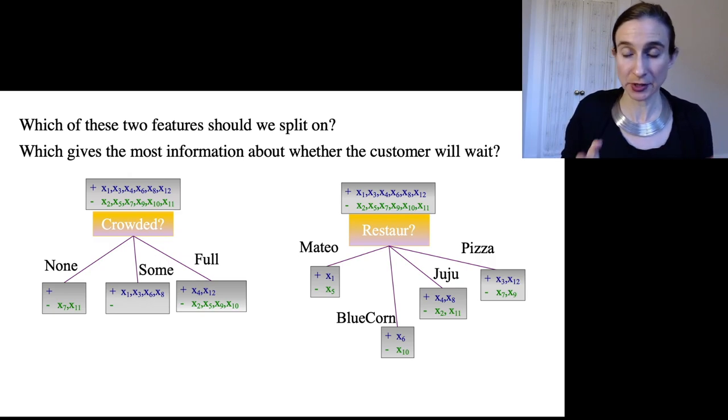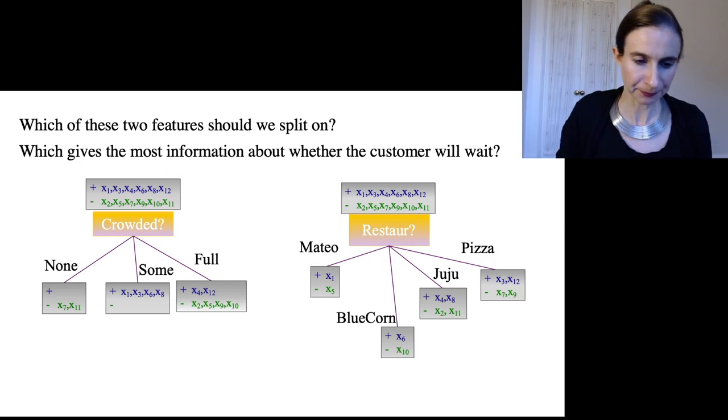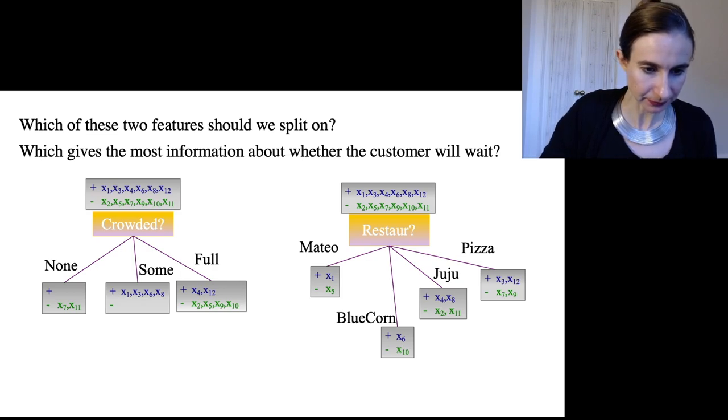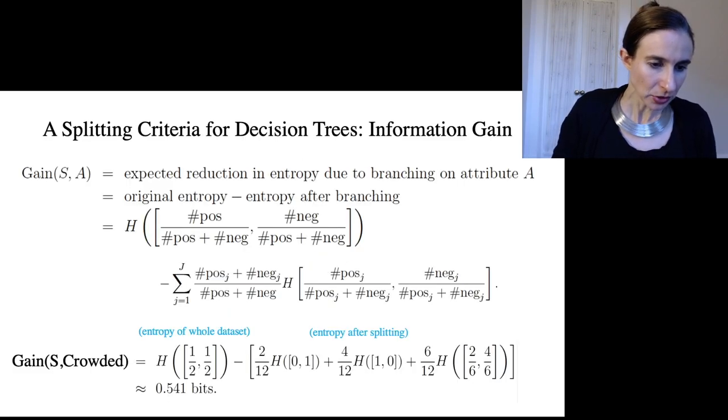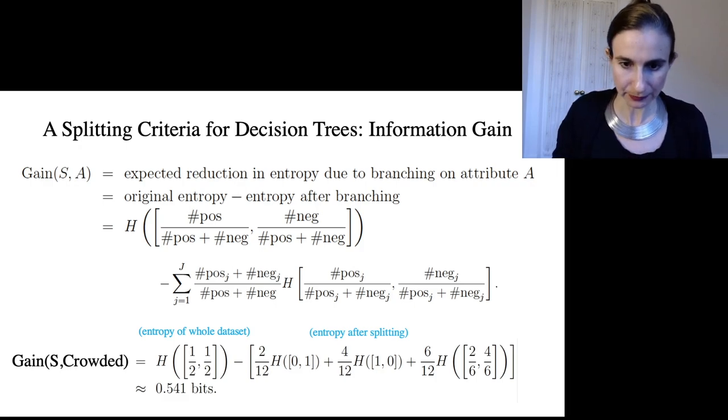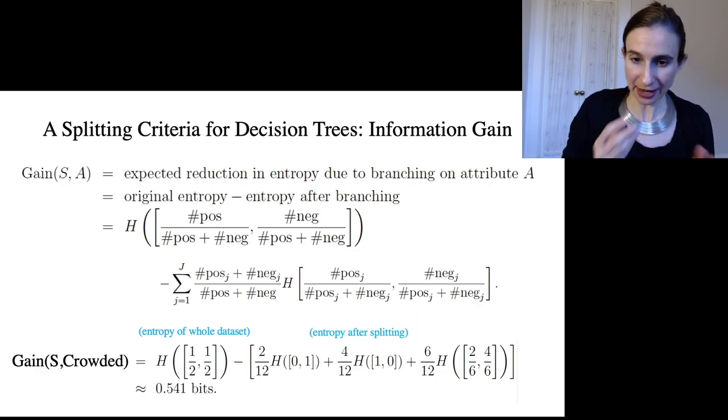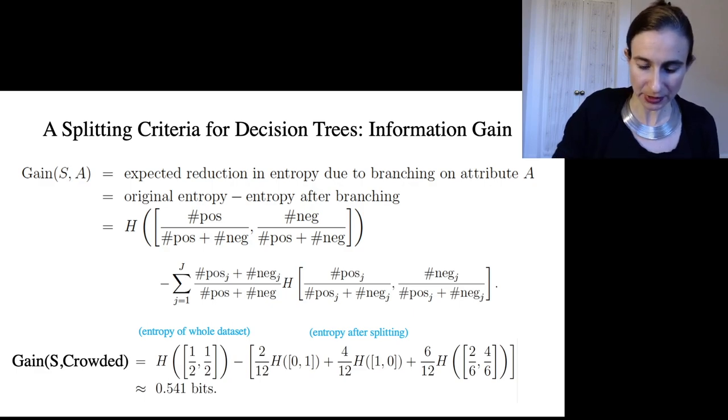So when we think about which of these two we want to split on, intuitively it seems like crowded would be the right one. But let's see if we can make that concrete by calculating the information gain. So if we calculate the information gain based on the crowded split, then before we split it was half and half—half positive, half negative.